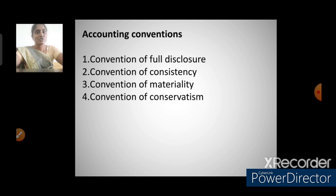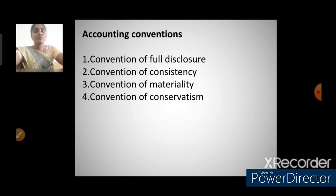Next, accounting conventions. First, convention of full disclosure — all accounting statements should be prepared honestly and fully disclose significant information. Second, convention of consistency — accounting practices should remain unchanged from one period to another; for example, if depreciation is charged using the straight-line method, that method should be followed year after year. Third, convention of materiality — all important items and facts should be disclosed in accounting statements. Fourth, convention of conservatism — an accountant should record the lowest possible values for assets and revenue, and the highest possible values for liabilities and expenses.